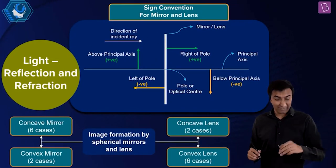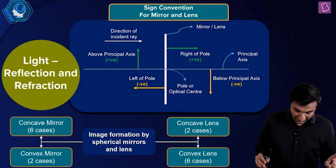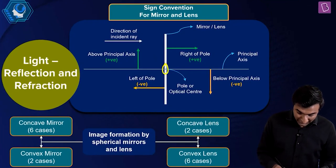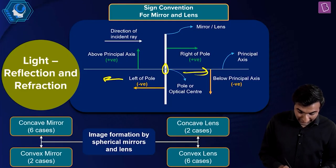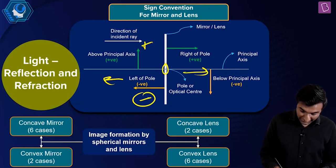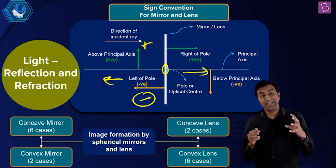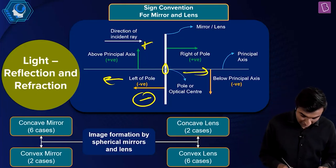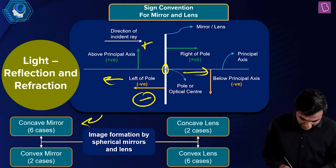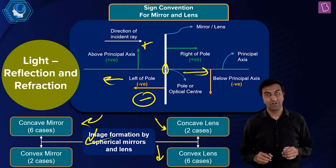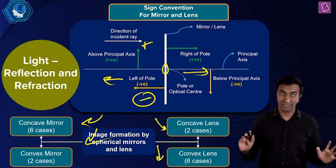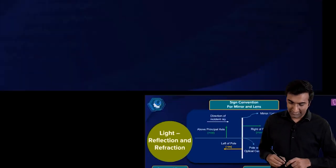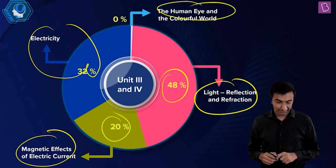The sign convention: you've got the pole — on one side positive, on the other side negative. If you go above, it's positive; if you go below, it's negative. Be careful about the signs — that's the most important thing. Then you have so many different cases of concave and convex mirrors and lenses. Don't try to mug them — solve a lot of questions. Just math.